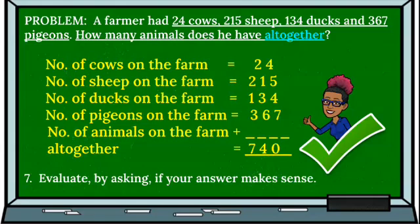When we add our cows, sheep, ducks, and pigeons, we get a total of 740 animals on the farm altogether. So let's move on to our last step where we evaluate by asking if our answer makes sense.